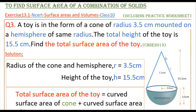The toy is in the form of a cone as well as a hemisphere — the cone is mounted on the hemisphere. We have to find the total surface area of this toy. The given values are: total height of the toy is 15.5 centimeters, and the radius of both the hemisphere and the cone is 3.5 centimeters.